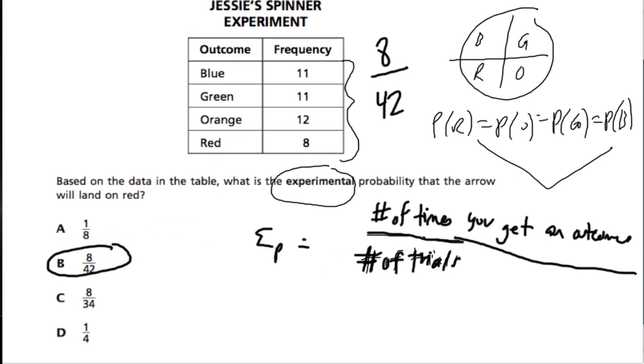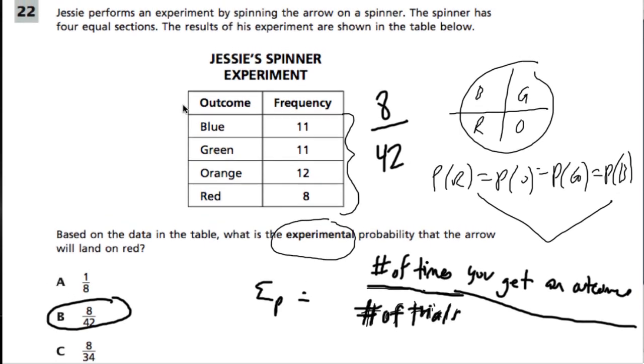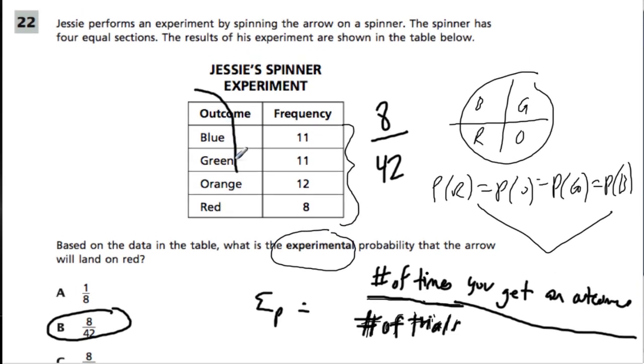Now, suppose it was written a different way, which was just theoretically, you have a spinner with four equal categories. If you spin it 100 times, how many times can you expect to get blue or green or orange or red? Well, that's when you use your theoretical probability to have an understanding of what could happen, which is you might expect each of them to occur close to 25 times.